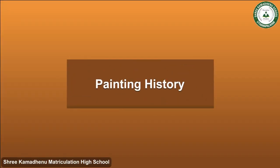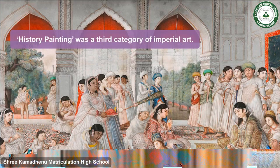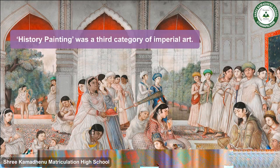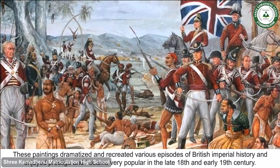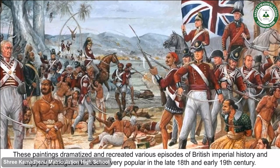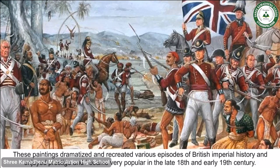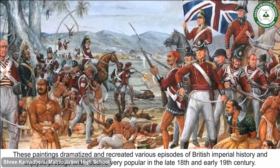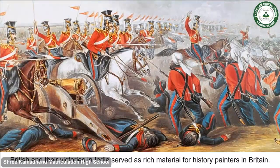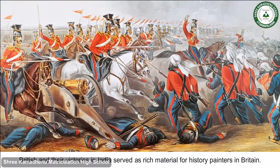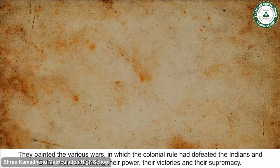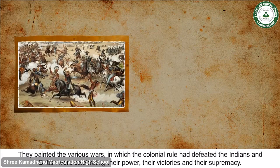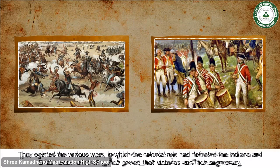History painting was a third category of imperial art. These paintings dramatized and recreated various episodes of British imperial history, and enjoyed prestige, becoming very popular in the late 18th and early 19th century. British victories in India served as rich material for history painters in Britain, who painted the various wars in which colonial rule had defeated the Indians, celebrating British power, victories, and supremacy.